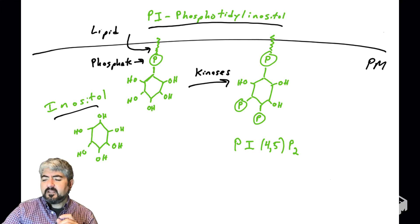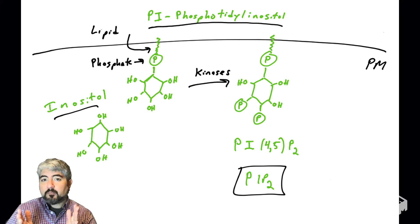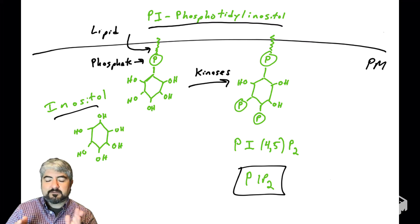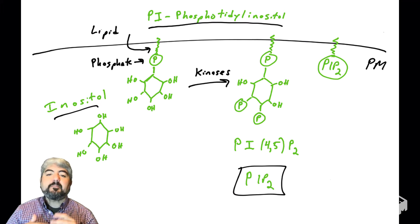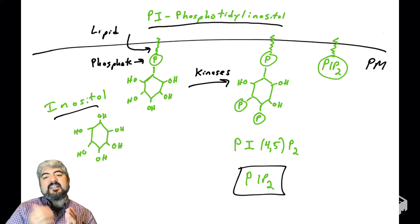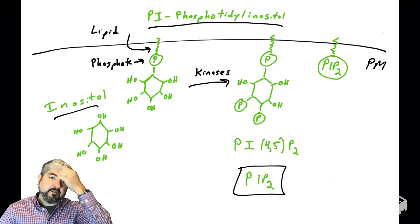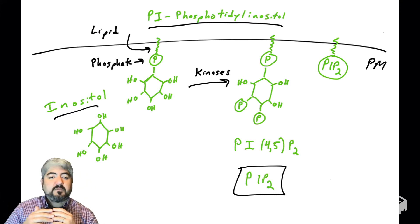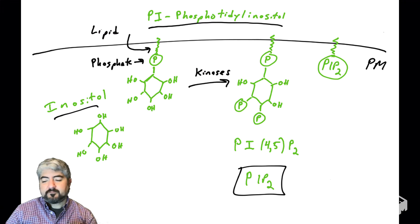A more common name for this molecule is PIP2. This is a very important signaling molecule. Instead of drawing out all those carbons, we typically just draw this molecule as PIP2, with that little lipid tail that embeds this sugar into the plasma membrane. PIP2 is the sugar inositol modified with phosphates and a lipid tail — that's all PIP2 is. Very simple.